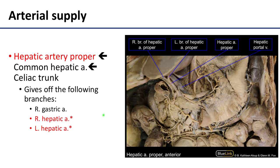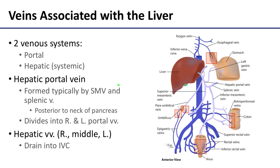The main arterial supply for the liver is from the hepatic artery proper, which gives off the right and left hepatic arteries, branching right before it reaches the liver. There are two venous systems associated with the liver: the portal and the hepatic, or systemic. The hepatic portal vein is formed by the superior mesenteric vein and the splenic vein, just posterior to the neck of the pancreas. It divides into the right and left portal veins entering the liver. The parenchyma is drained by three main hepatic veins, which drain into the inferior vena cava just inferior to the diaphragm.